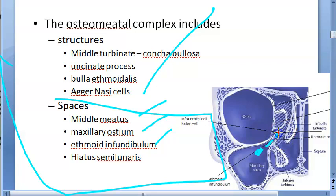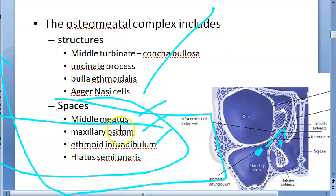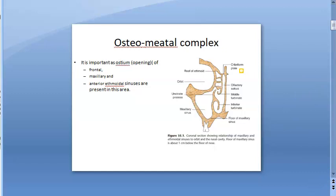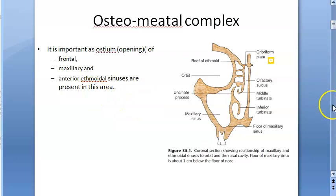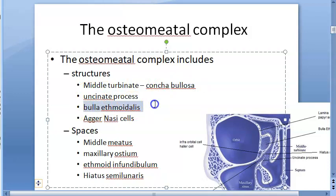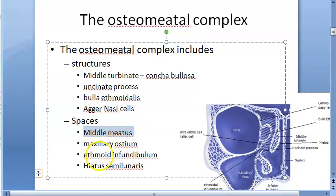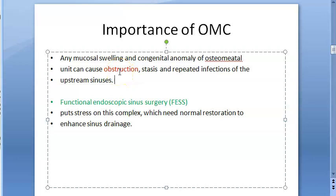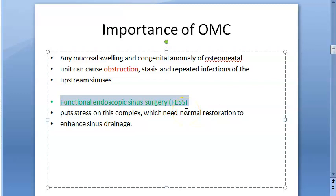We are done with the osteomeatal complex. Let us take a review. The osteomeatal complex is a common opening for the frontal, maxillary, and anterior ethmoidal sinuses. It has four structures: middle turbinate (which can have concha bullosa), uncinate process, bulla ethmoidalis, and agger nasi cells. Four spaces: middle meatus, maxillary ostium, ethmoidal infundibulum, and hiatus semilunaris. Its importance: if obstructed, it impairs drainage of all those sinuses, leading to stasis and repeated infections. FESS focuses on this complex to relieve and enhance sinus drainage.